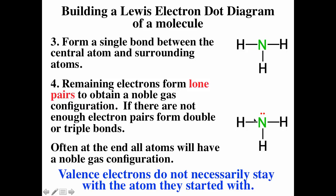Verifying the ammonia diagram: we used all eight valence electrons. Each hydrogen sees two electrons — that's noble gas configuration for hydrogen. Nitrogen sees eight electrons total (2+2+2+2), which is also noble gas configuration. Everything has noble gas configuration, so this should be a fairly stable structure.